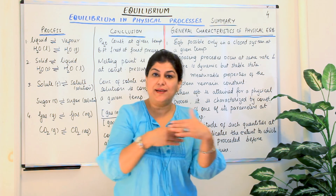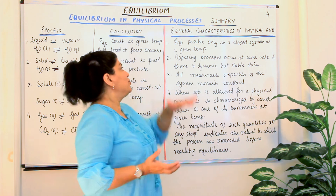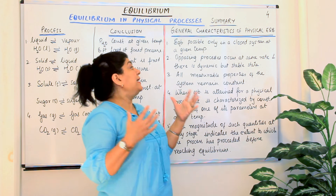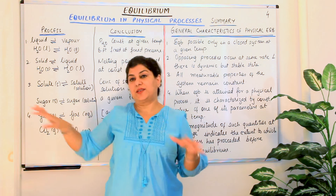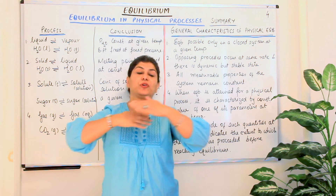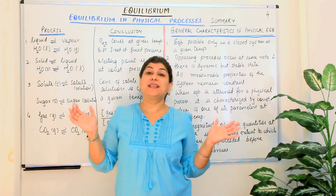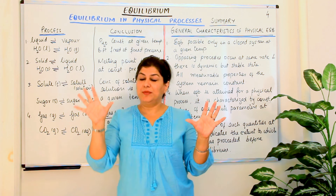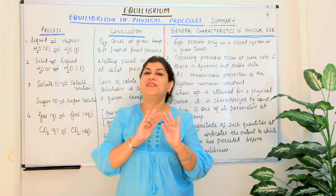Both the reactant and the product will be at the same temperature. Opposing processes occur at the same rate, and there is a dynamic but stable state. The reactant turns into product and product turns into reactant simultaneously at the same rate. This dynamic state means a lot of activity is taking place, but it appears stable because the concentrations of reactants and products become fixed.